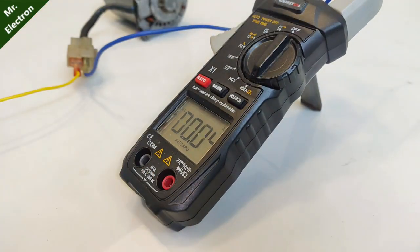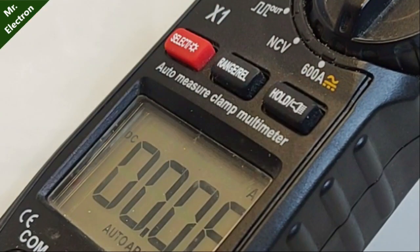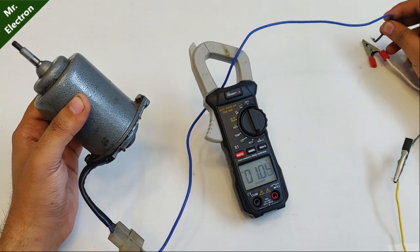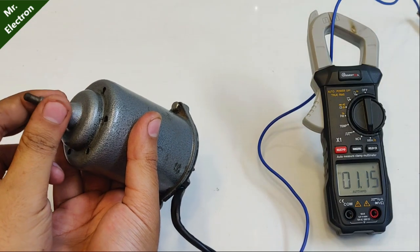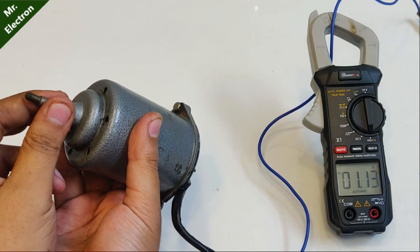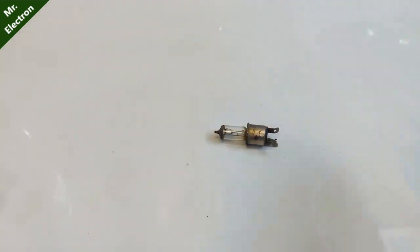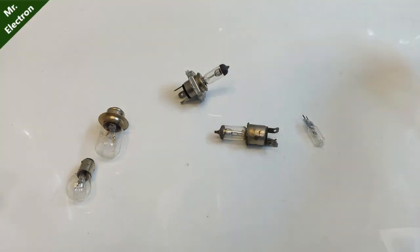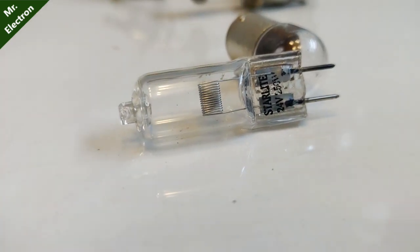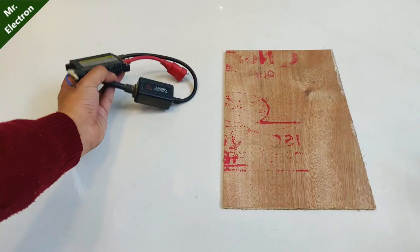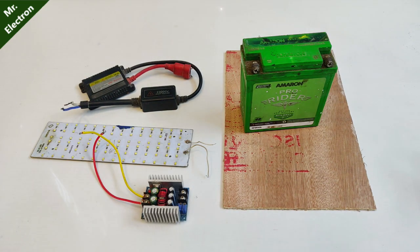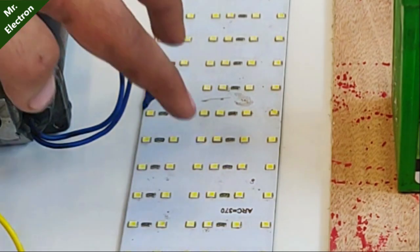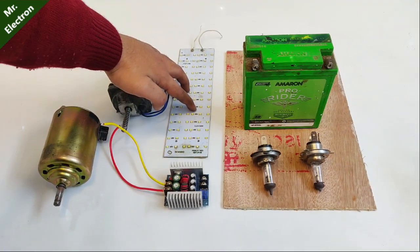A DC motor is a variable current type of load which means that the current keeps on changing as the load changes. Higher the load on the motor shaft, more is the current drawn by it. Next, what you see are a few incandescent bulbs which come under the category of constant current type of resistive loads. And the final ones are the constant voltage loads which are our electronics circuits and batteries.